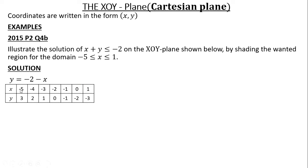We'll start. When X is negative 5, replace X with negative 5 — when you have a minus and a negative, it is the same as a plus. So it's the same as negative 2 plus 5, which gives us positive 3. When X is negative 4, Y will be negative 2 plus 4, which gives us positive 2. When X is negative 3, negative 2 minus negative 3 is the same as negative 2 plus 3, which gives us positive 1. When X is negative 2, we get negative 2 plus 2, which gives us 0. When X is negative 1, negative 2 plus 1 gives us negative 1. When X is 0, negative 2 minus 0 gives us negative 2. When X is 1, negative 2 minus 1 gives us negative 3.